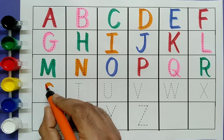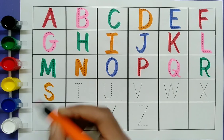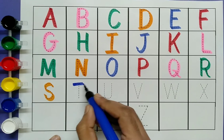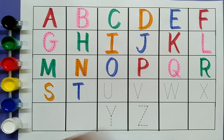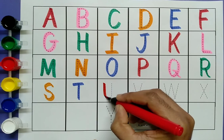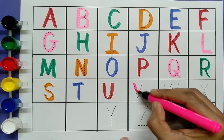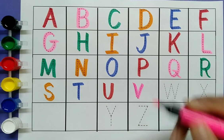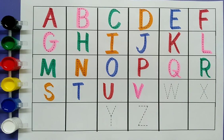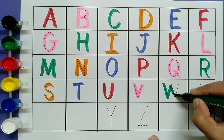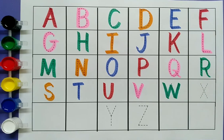S, S for ship. T, T for telephone. U, U for umbrella. V, V for vane. W, W for watch.